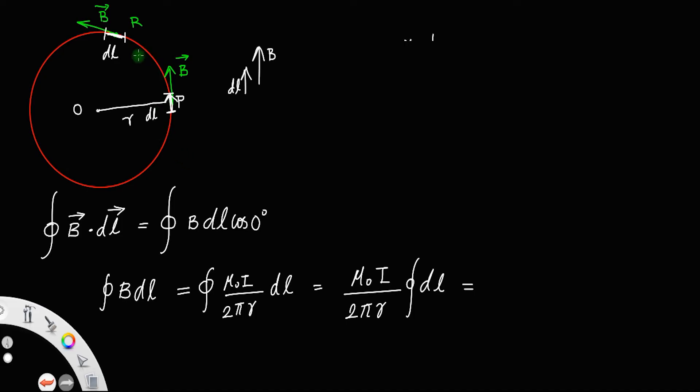Now, if you integrate DL along this closed circle, what you get is the total length will be the perimeter of the circle. So, this is equal to mu 0 I divided by 2 pi R. Integral DL is equal to the perimeter of this circle, which is 2 pi R, so you can cancel this 2 pi R and 2 pi R.